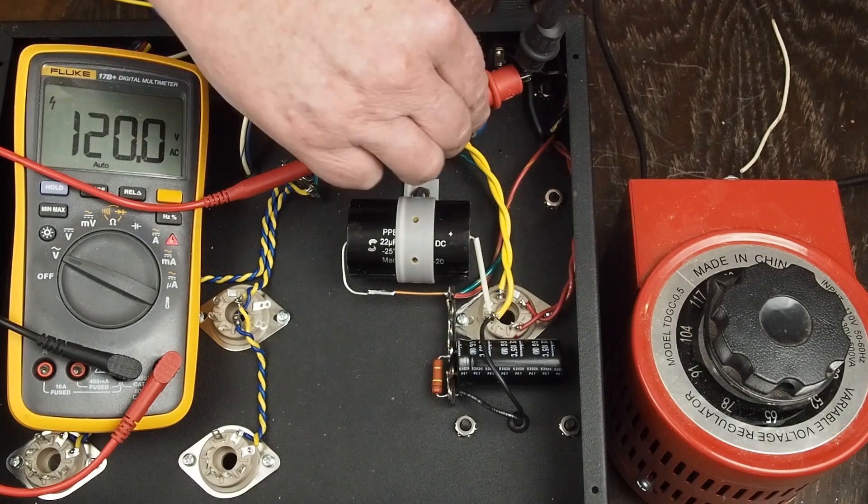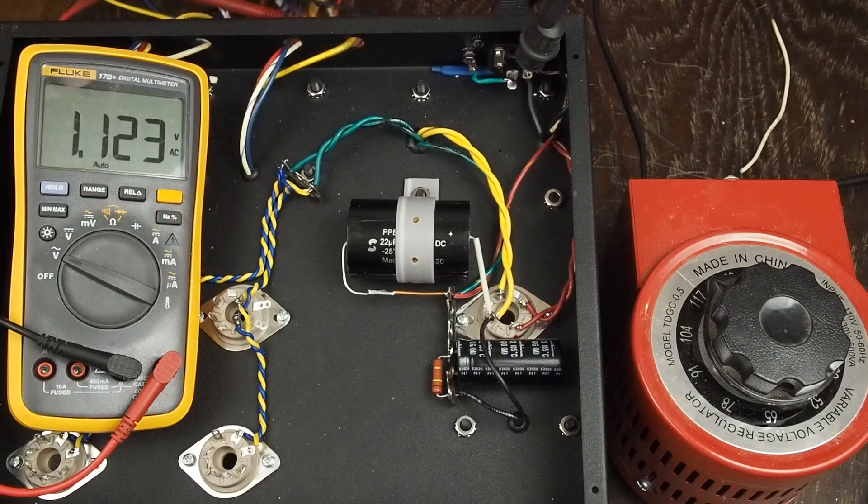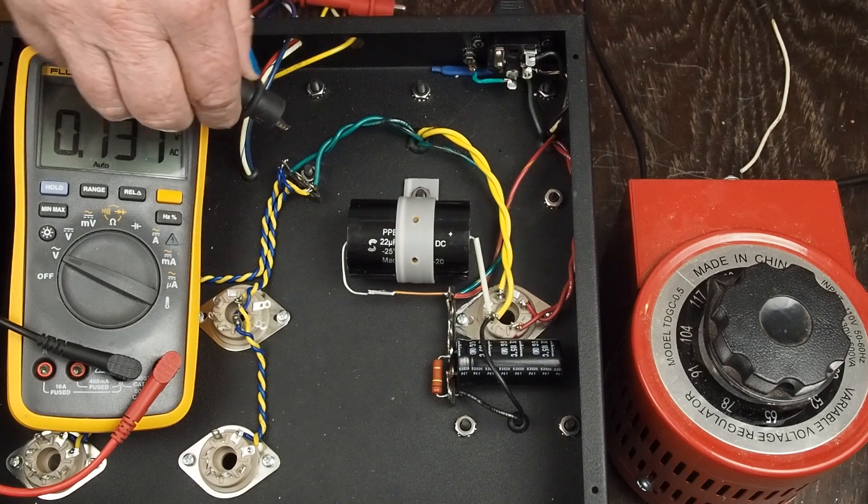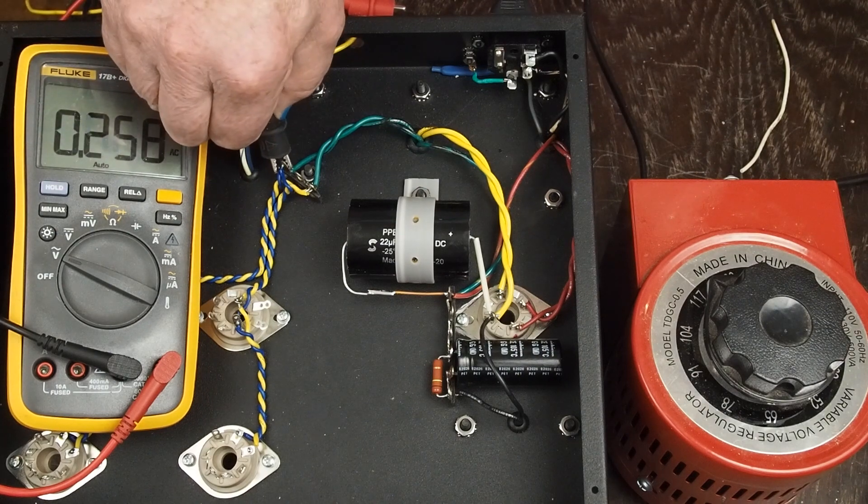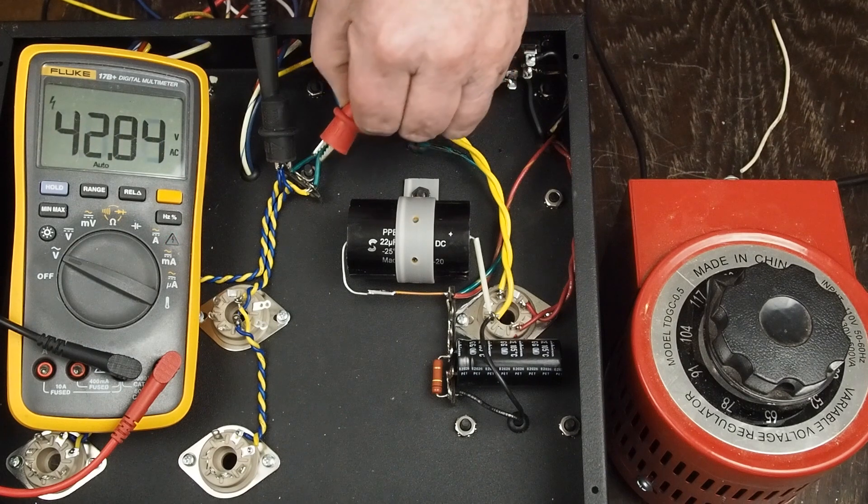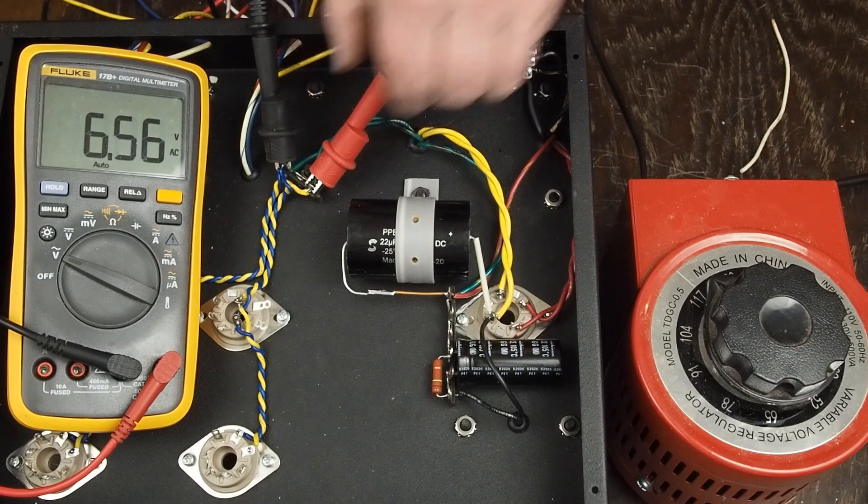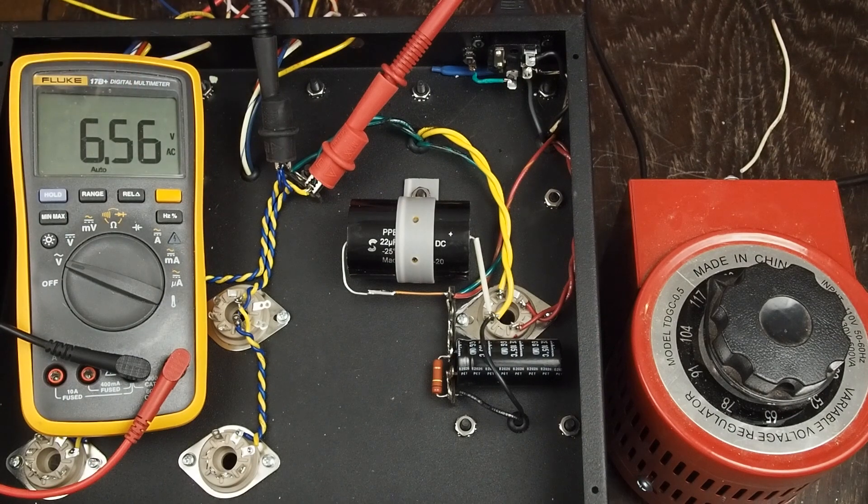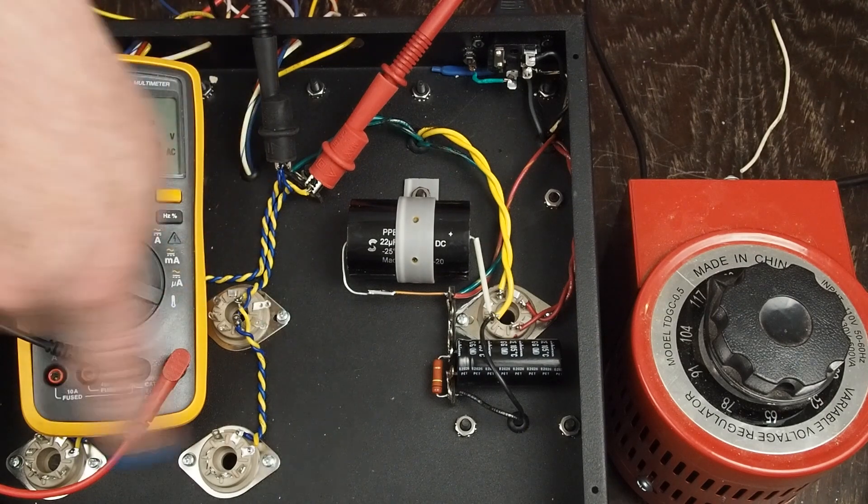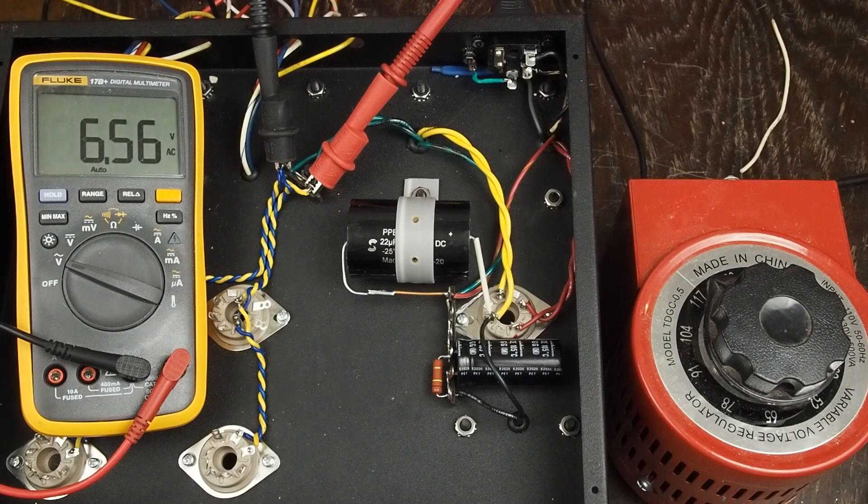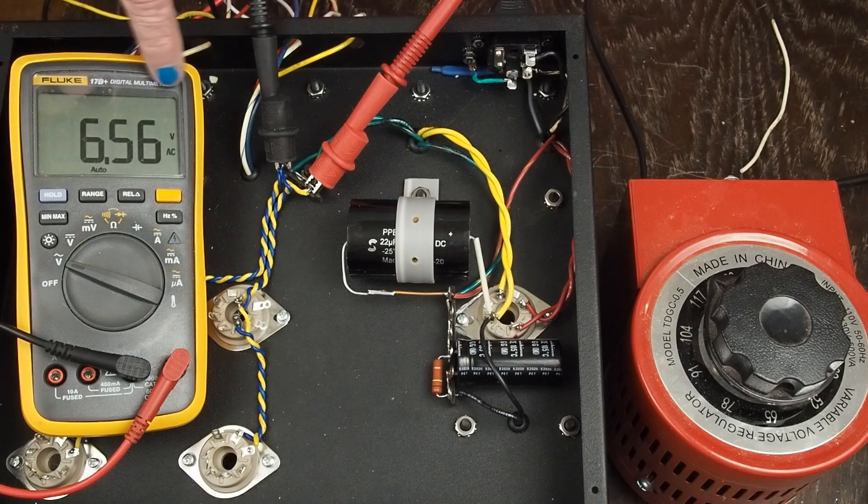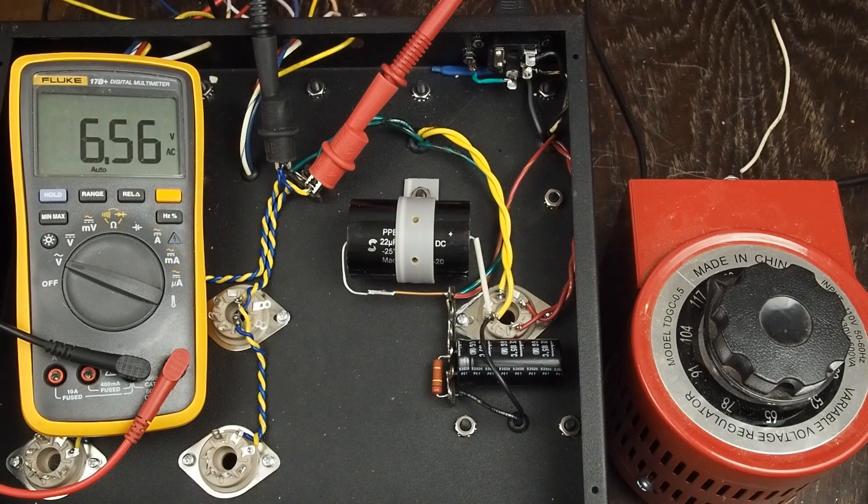Okay, next thing we want to check is to make sure that our heater wiring is 6.3 volts or close to it. Now it's going to be high because there's no tubes in it to pull down the voltage, and I'm expecting... yeah, there's six and a half volts. Now that'll probably come down to 6.3-ish once we get the load of these tubes in the sockets, but we can check that and see if that's what it is or not. But we know we're close enough. We're not going to blow up any tubes by putting them in the sockets and checking them.